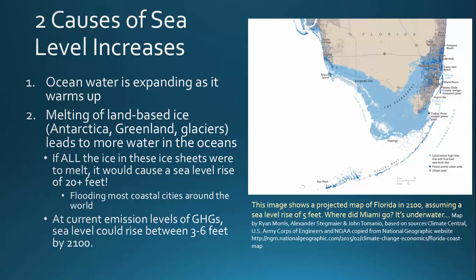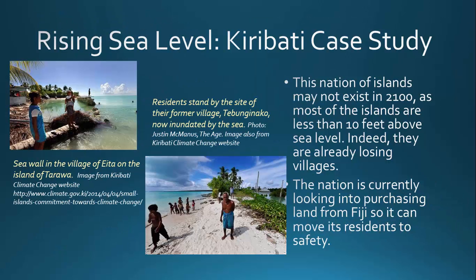So a large part of Florida would be submerged in this scenario. A kind of canary in the coal mine is the island country called Kiribati — spelled K-i-r-i-b-a-t-i but pronounced 'Kiribati' by locals. This island nation in the Pacific Ocean sits on average less than 10 feet above sea level, and they are already losing villages to sea level rise.